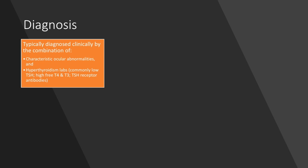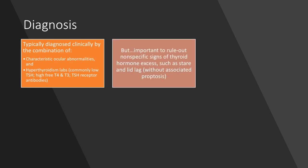Progressive proptosis should encourage testing for TSH receptor antibodies, usually the thyroid-stimulating immunoglobulin subtype mentioned previously when discussing pathogenesis. It is, however, important to rule out nonspecific signs of thyroid hormone excess, such as lid retraction, temporal flare, and lid lag, without the associated bulging of the eyes. The figure showing lid retraction and temporal flare below highlights this.